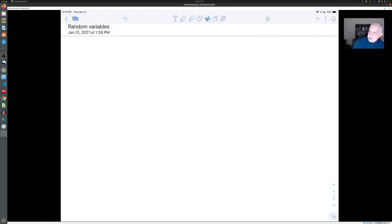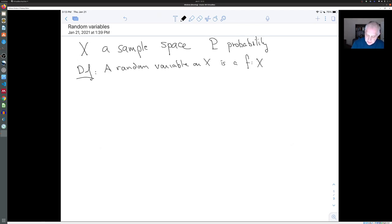So to be more specific, let's suppose you start with a sample space X, and you have a probability function P. And by definition, a random variable on X is just a function from X to the real numbers.